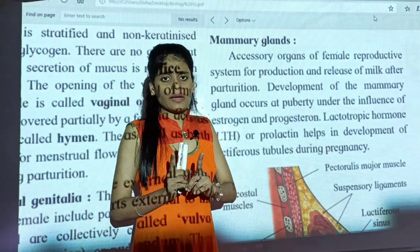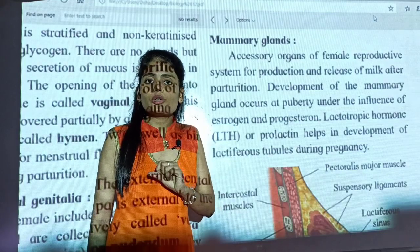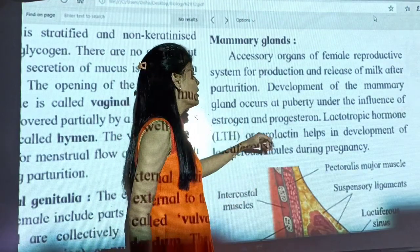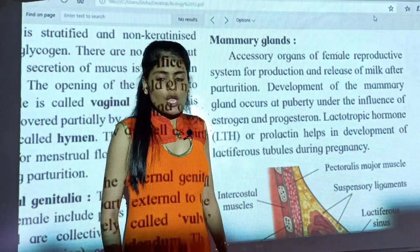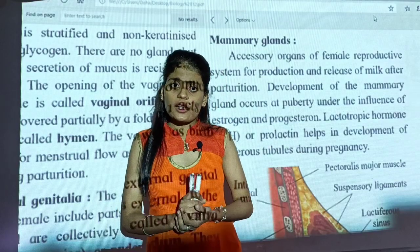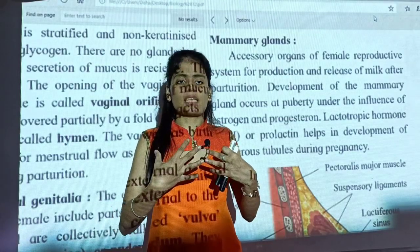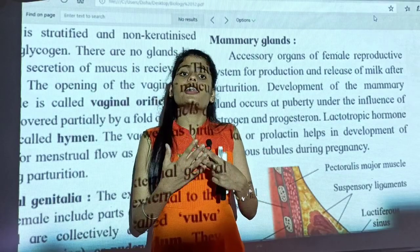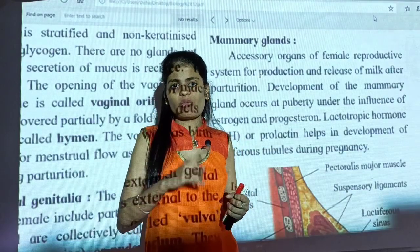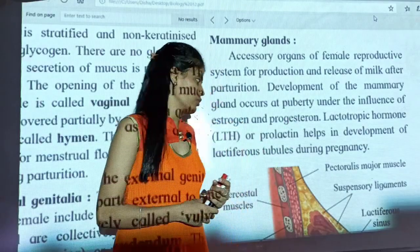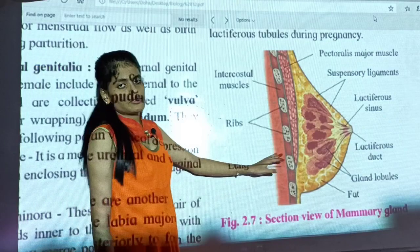Lactotropic hormone (LTH), also known as prolactin, helps in the development of lactiferous tubules during pregnancy. The milk production starts during pregnancy, causing mammary glands to enlarge in size. However, the release of milk starts only after parturition — once the child is delivered. Let us look at the transverse section (TS) of a mammary gland to understand its structure.